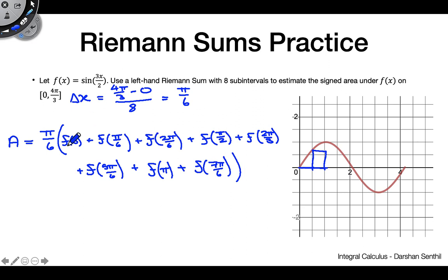Now we just need to evaluate f(x) at each of these points, add them all together, multiply by π/6, and we're done.